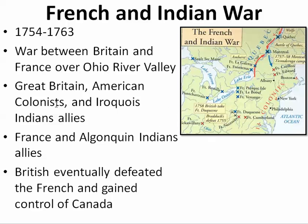Great Britain, the American colonists from the 13 colonies, and Iroquois Indian allies are going to fight against France in Quebec and New France along with the Algonquian Indians — Indians are going to be on both sides. The British will eventually defeat the French and their Indian allies and gain control of all of Canada. Great Britain will come to control most of North America and remove their French competition.